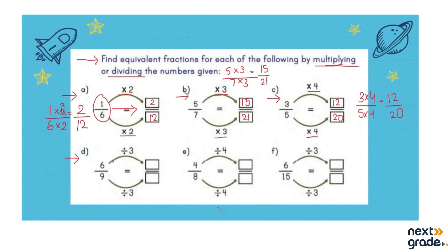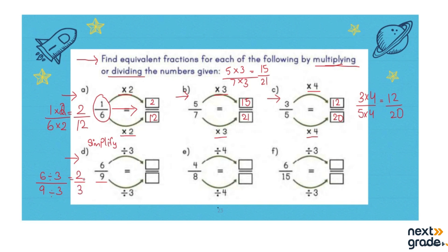In the next example we are going to find the equivalent fraction by dividing — that is, by simplifying the given fraction. We are going to divide both the numerator and the denominator with the same number. So: 6 divided by 3 is 2, and 9 divided by 3 is 3. We get the simplified equivalent fraction, which is 2 over 3.